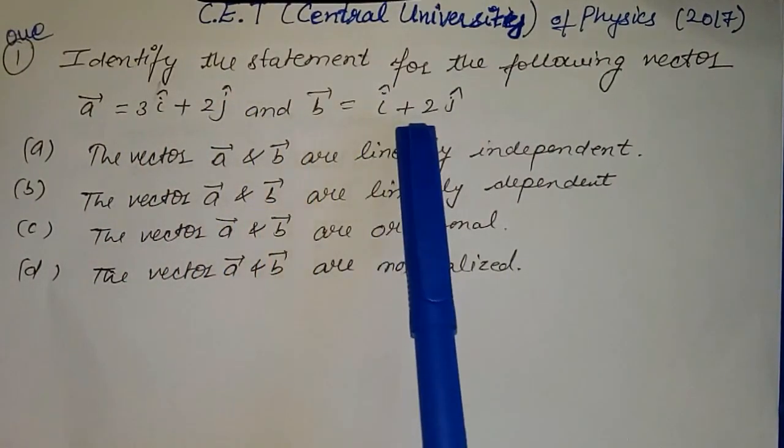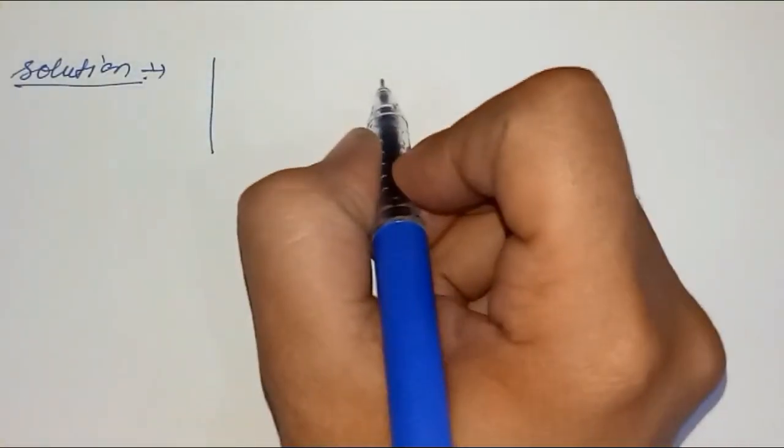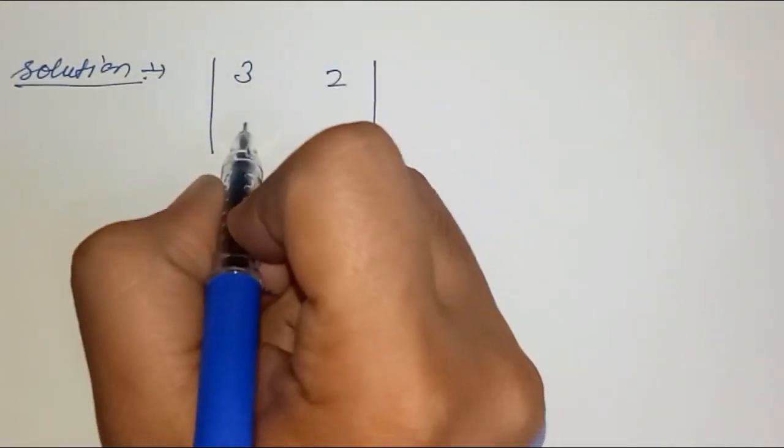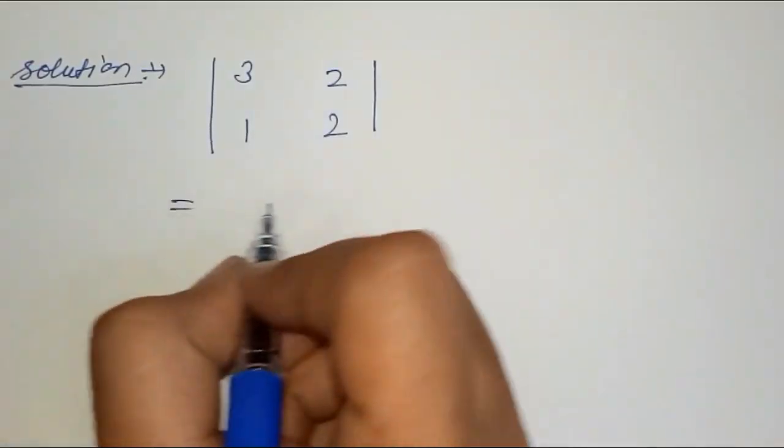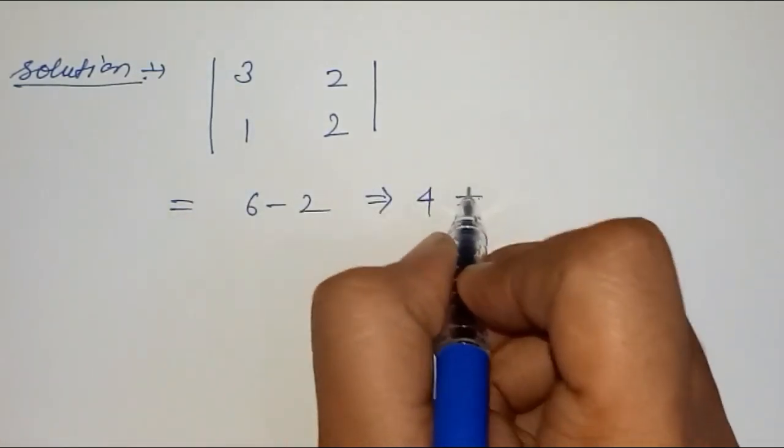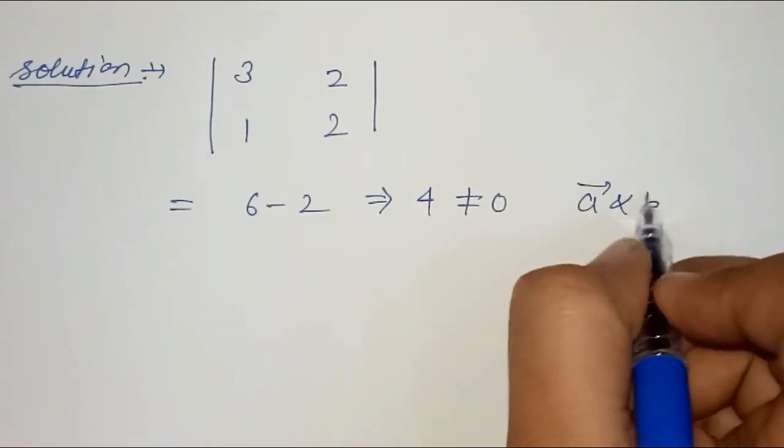First we solve the determinant of the vectors: 3, 2, 1, 2. That is 6 minus 2 equals 4, that is not equal to zero. So a vector and v vector are linearly independent.